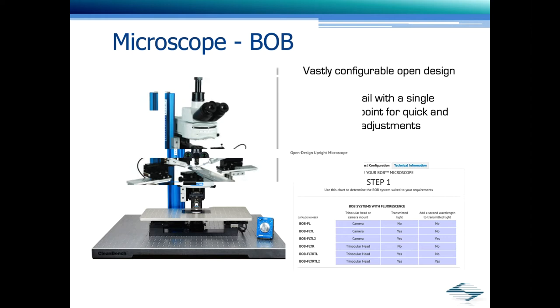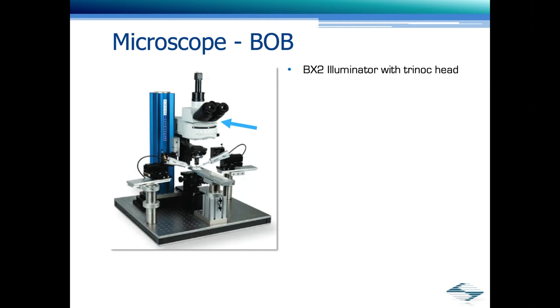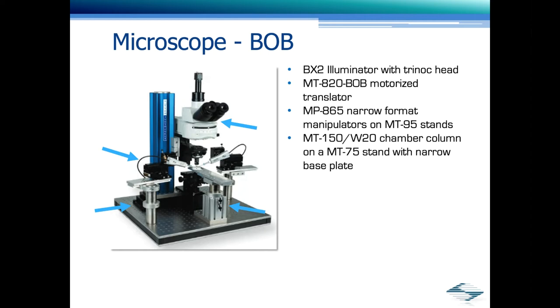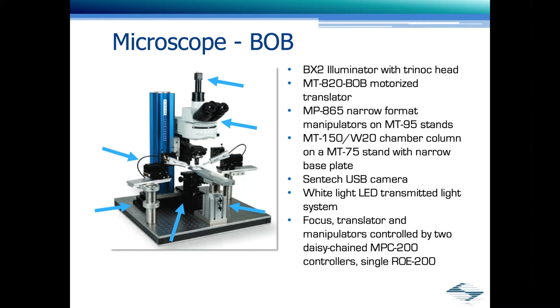Here is one of our most popular BOB configurations, which includes a BX2 eliminator with a tri-knock head, an MT820 BOB motorized translator, two MT865 narrow format manipulators mounted on MT95 stands, an MT150 W20 chamber column on an MT70 stand with a narrow base plate, and Centec USB camera. White light LED transmitted light system. The focus translator manipulators are controlled by two daisy-chained MBC 200 controllers with a single ROE 200. Also not shown is a dual epilumination provided by the FLED DC.